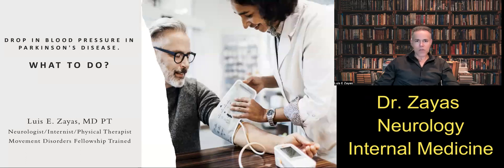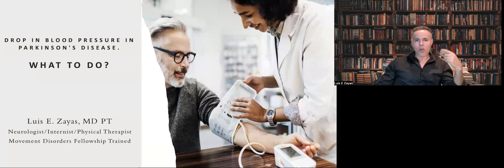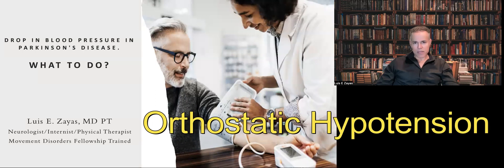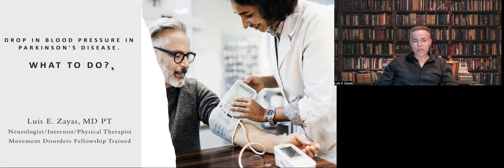Hello and welcome to my channel. Today we are going to talk about a relatively common problem that you see in advanced Parkinson's disease, but you can also see this problem in early stages of Parkinson's disease. More commonly you see this problem in multiple system atrophy and Lewy body dementia. I'm talking about orthostatic hypotension, which is a drop in the blood pressure. Basically, what we are going to talk about today is what to do in those cases.